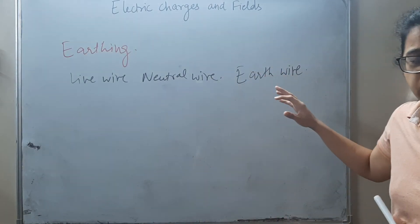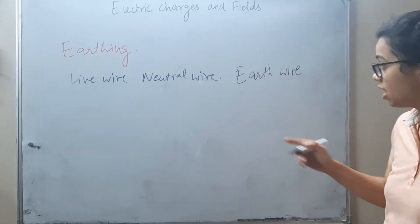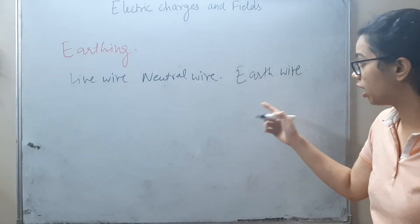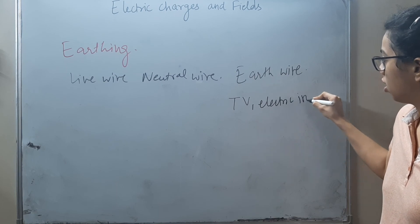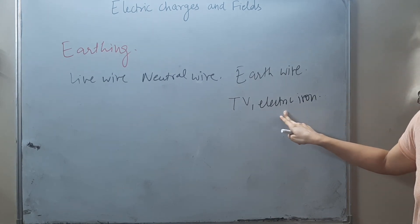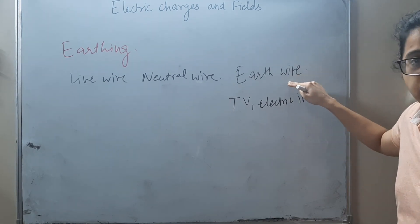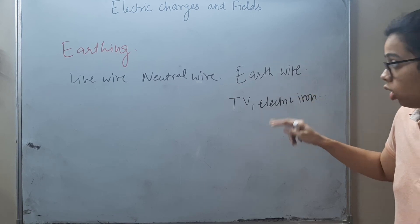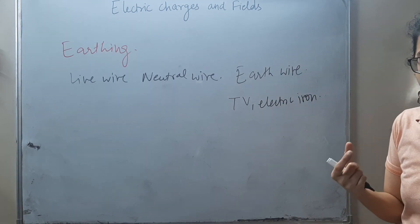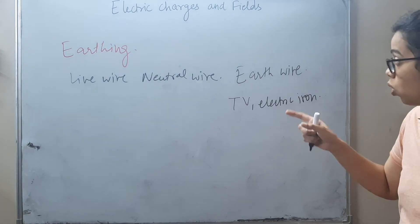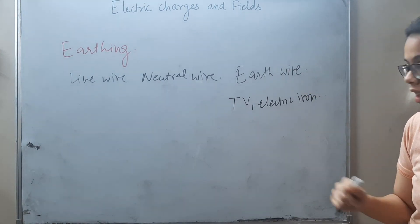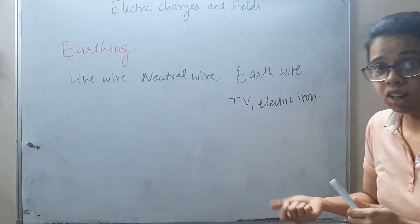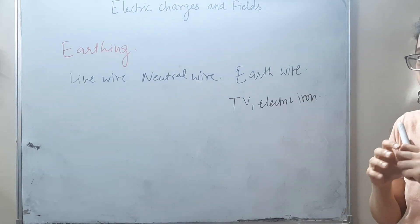So what do we do? We connect the metallic parts of electrical appliances with earth wire. So whenever there is excess charge or fault, the excess charge will leak through earth wire. Because if the excess charge leaks, it will not harm our human body.